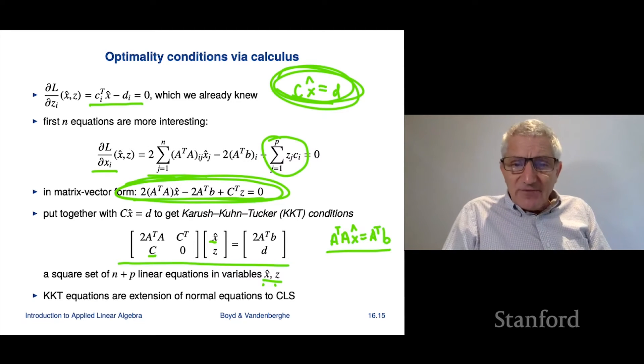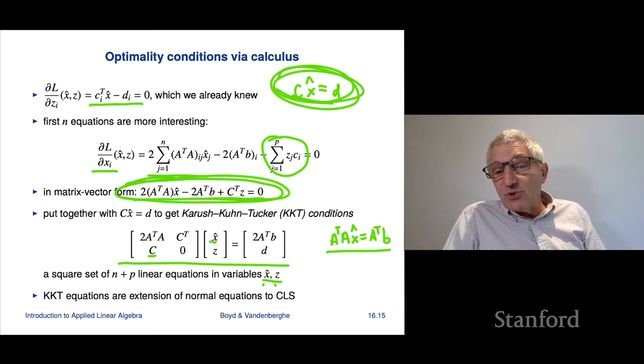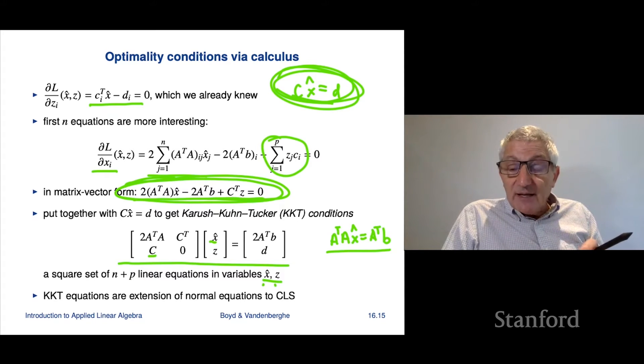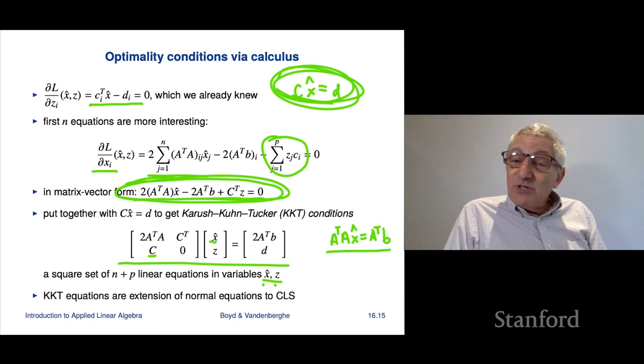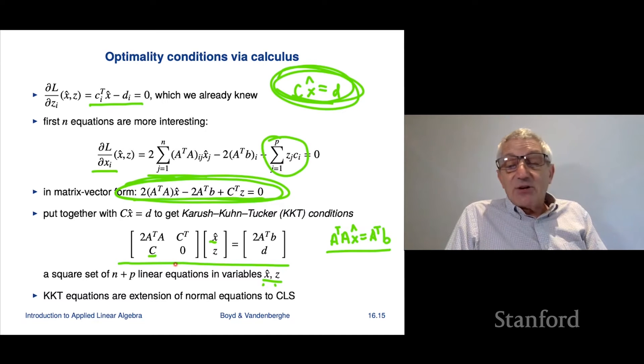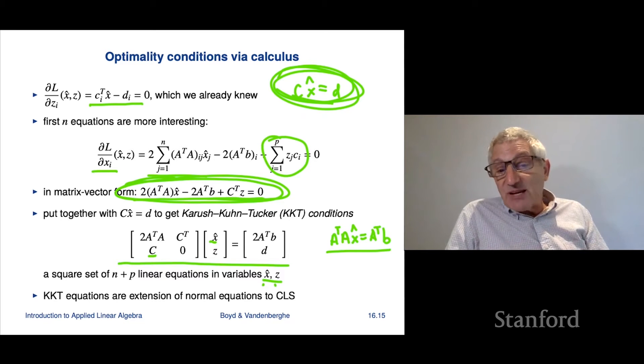By the way, this is very cool because what we've done is we have reduced solving a problem that we didn't know how to solve, which is constrained least squares problem, to one we do know how to solve, which is solving linear equations, right? So that's kind of our trick. The truth is we kind of did it with least squares as well.